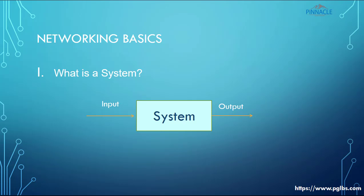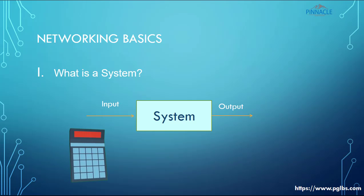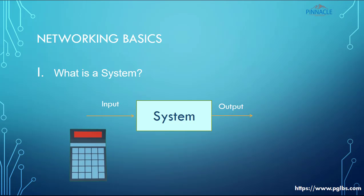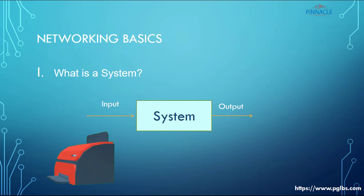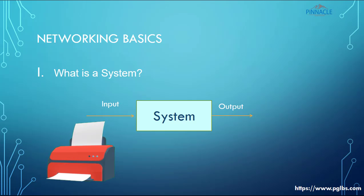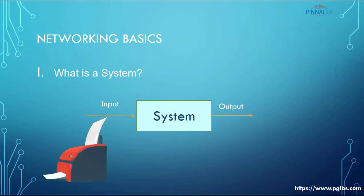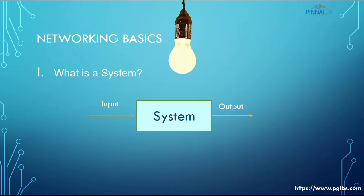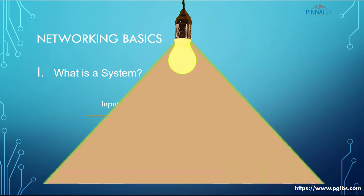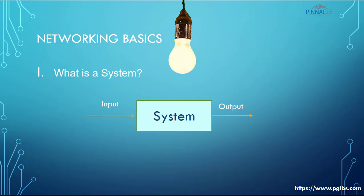One solid example is the calculator. A calculator is a simple system where it receives an input and gives an output. If you want to add, multiply, or divide numbers, you key in those numbers with the respective operation and the calculator gives you the result. Another example is a printer — it takes a print command as input and gives a printed document as output. Even switching on a light is an example: you switch on the switch and the bulb glows. So anything which receives an input and gives an output is called a system.